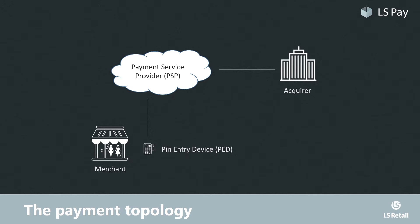It's common practice for PSPs to support multiple acquirers — for example, PayX, which is a Nordic PSP, supports both Nets and Swedbank as acquirers. And just to make things interesting, sometimes the PSP and the acquirer are the very same entity, such as is the case with WorldPay and Nets.